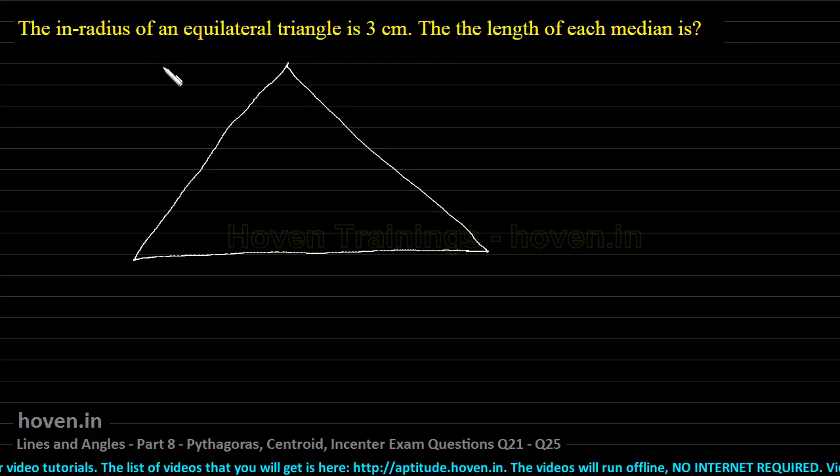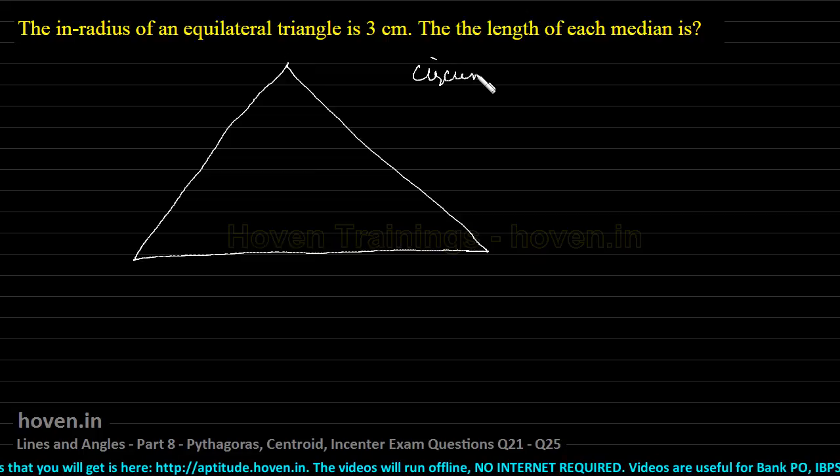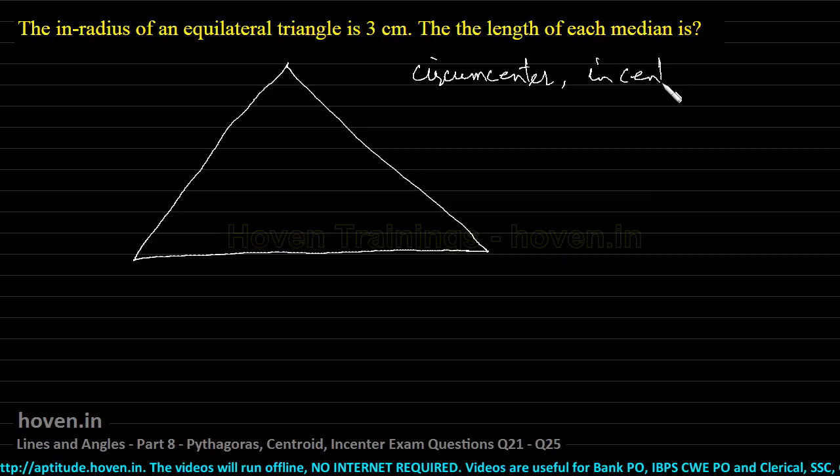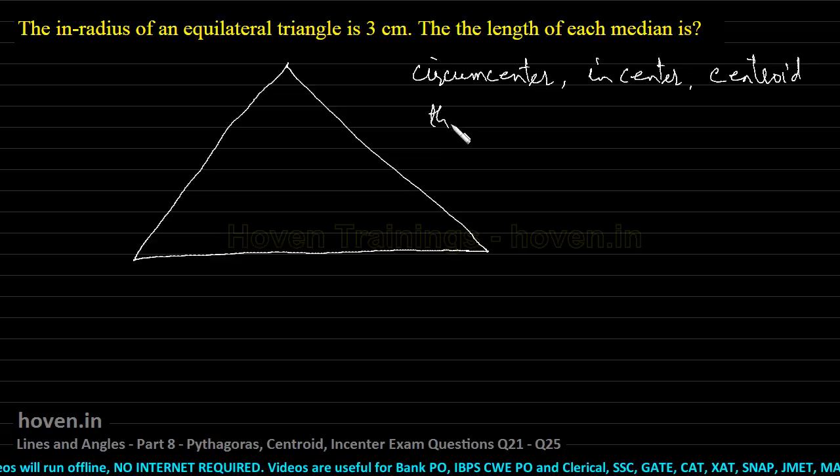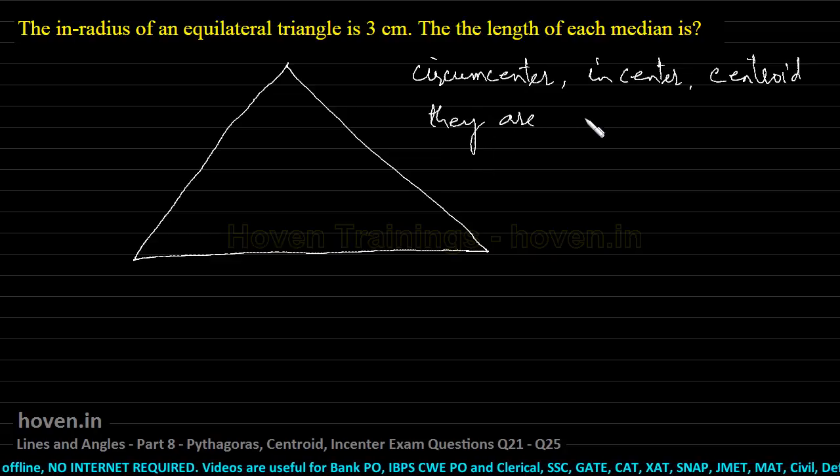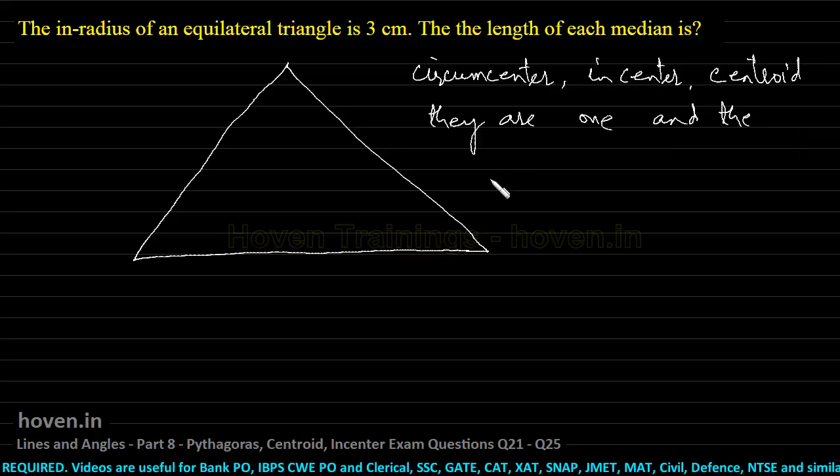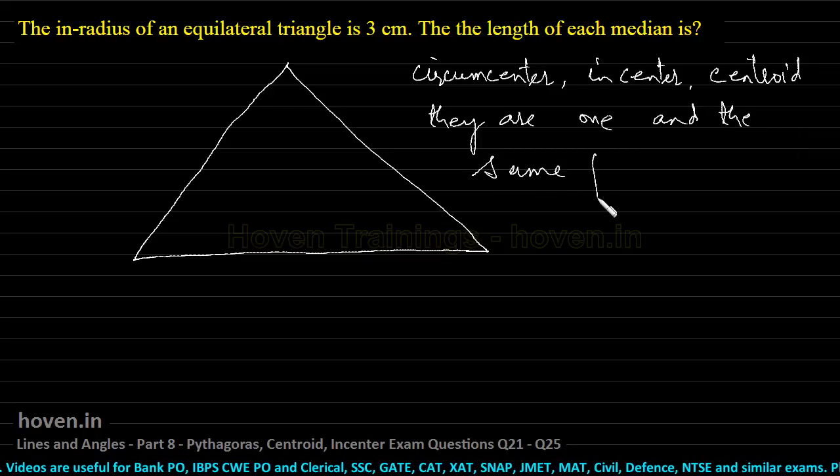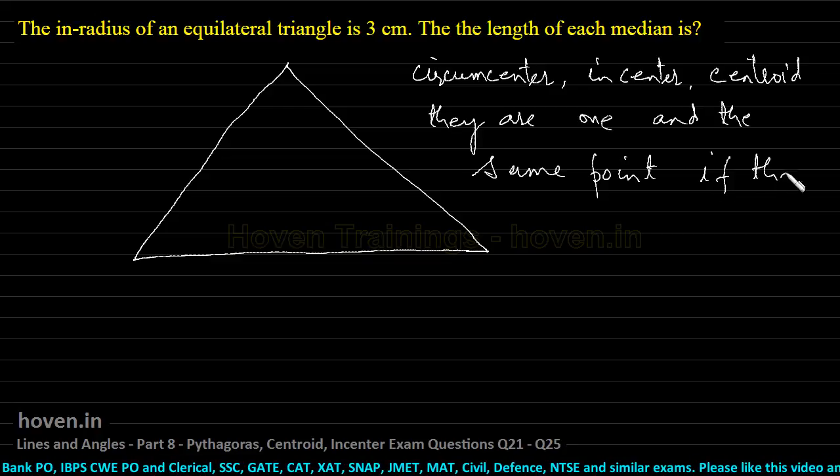The inradius. First of all, note down this property: circumcenter, incenter, centroid, they are one and the same point if the triangle is equilateral.